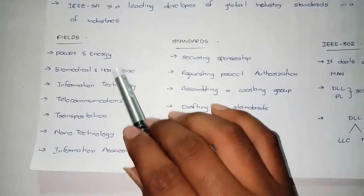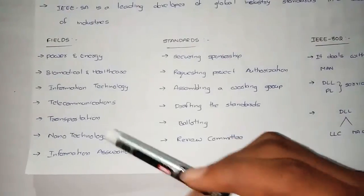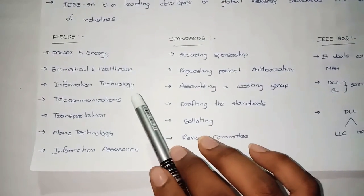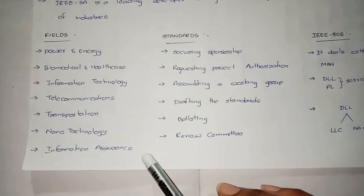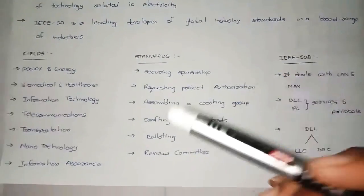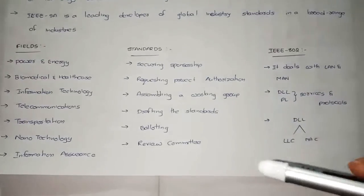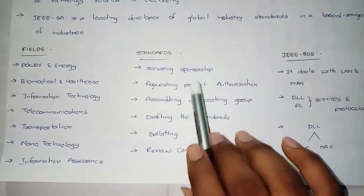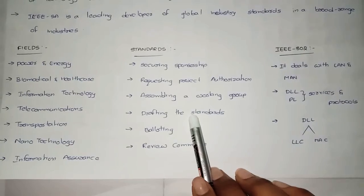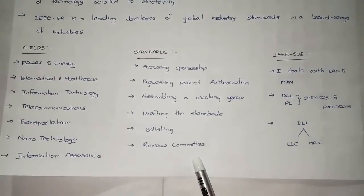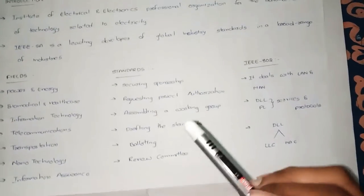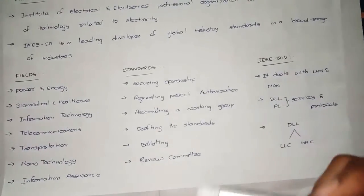The fields in which IEEE works include power and energy, biomedical and healthcare, information technology, telecommunication, transportation, nanotechnology, and information assurance. The process to develop a new standard involves: securing sponsorship, requesting project authorization, assembling a working group, drafting the standards, balloting, and committee review.